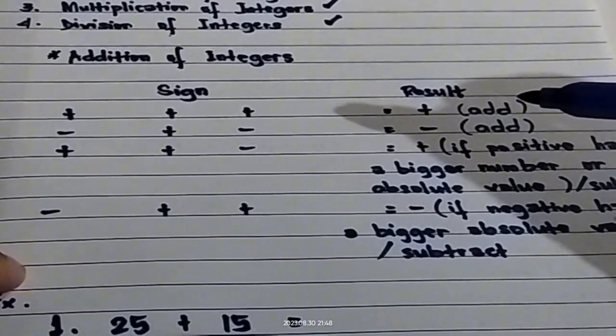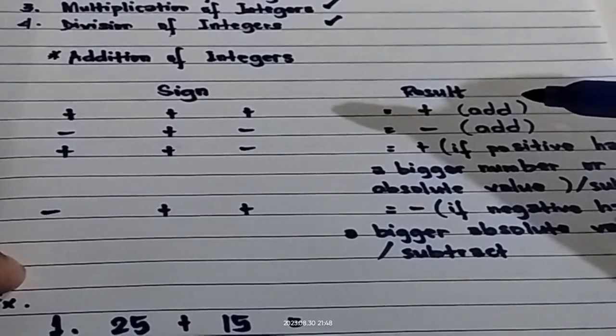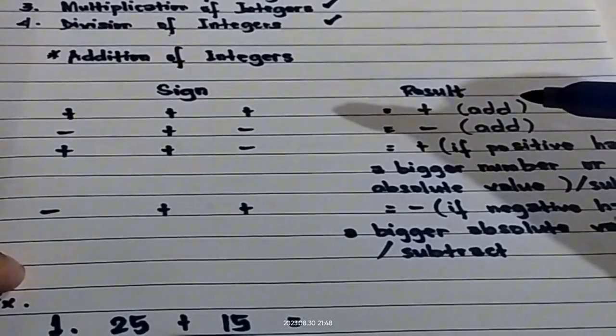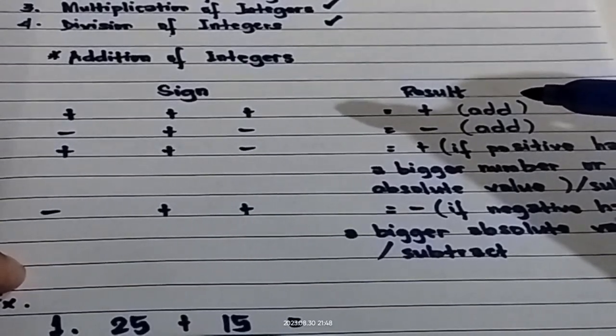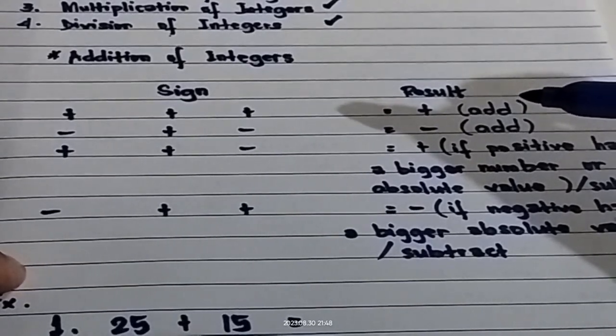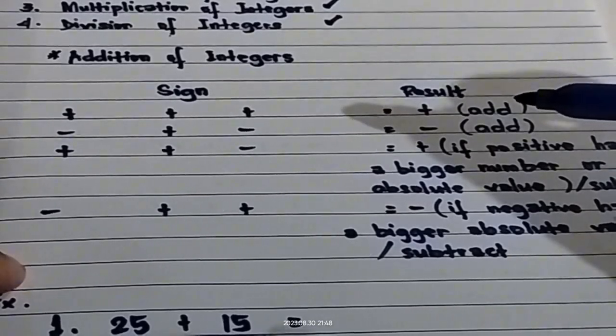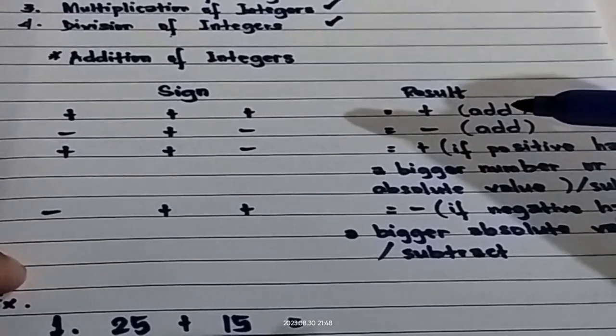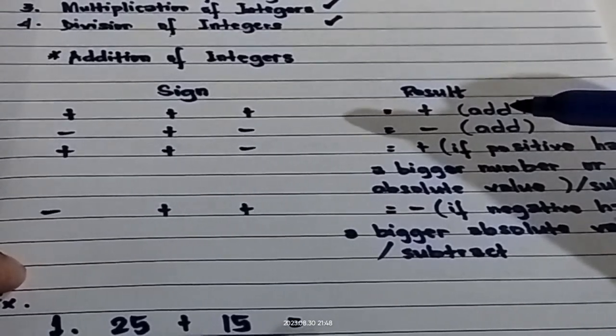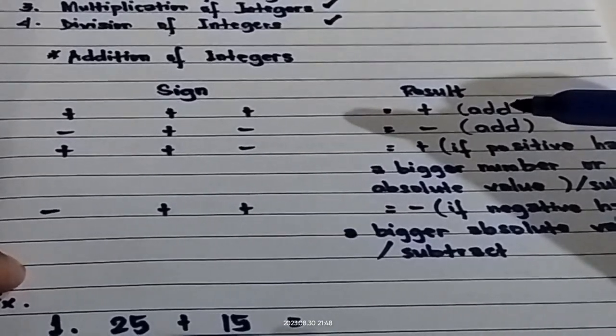Positive plus positive is equal to positive, and you're going to add. Negative plus negative is equal to negative, and then you're going to add.